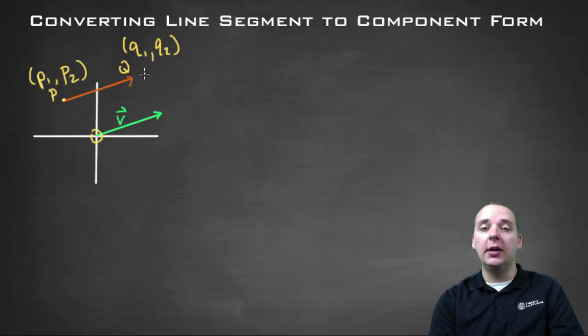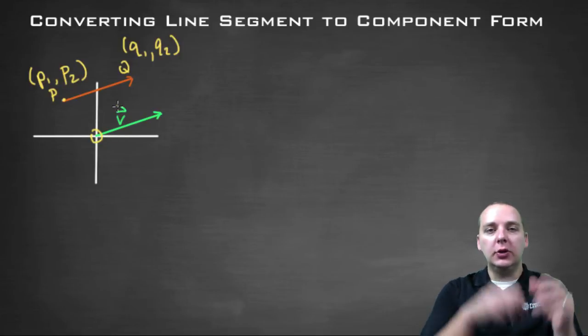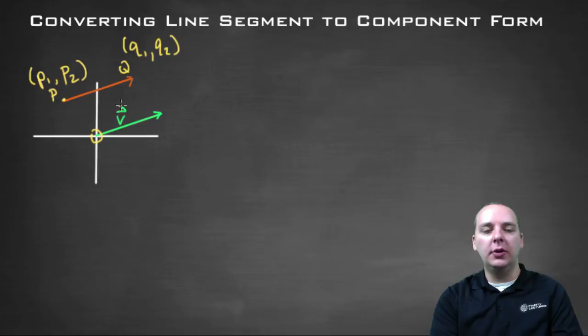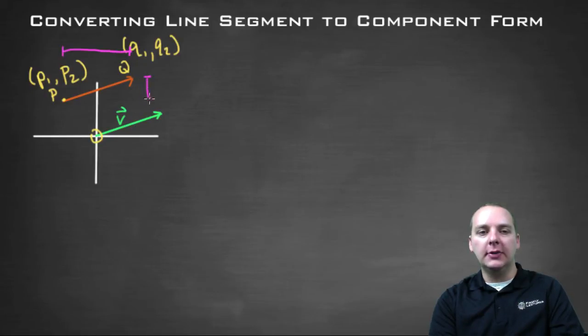So that's your starting and ending point for the line segment. To translate this down to the origin, basically all we need is the horizontal distance from point P to Q and the vertical distance from P to Q.